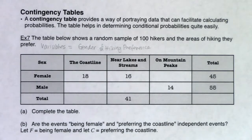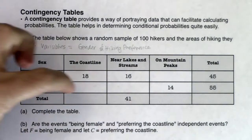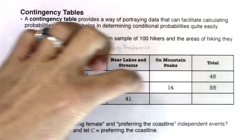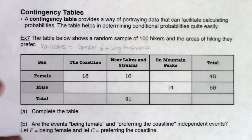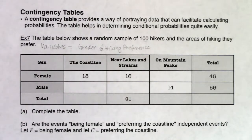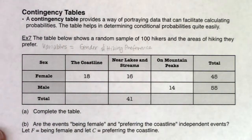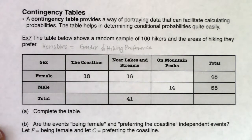Those are both categorical variables. You see me keeping track of a bunch of frequencies — these are all frequencies. Whenever you have categorical variables, we do keep track of frequencies and we turn them into proportions, or in this case we're going to officially call them probabilities. The first direction here says complete the table, and you can do this in a multiple number of ways.